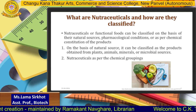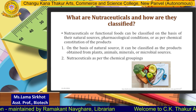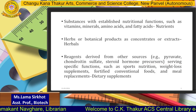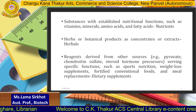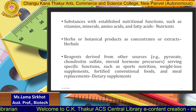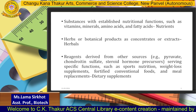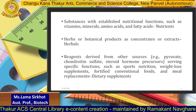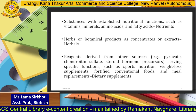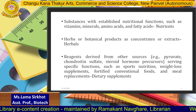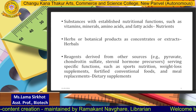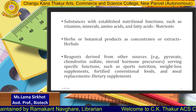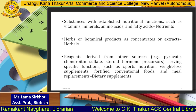Nutraceuticals classified as per their chemical groupings include: substances established for nutritional functions such as vitamins, minerals, amino acids, and fatty acids; herbs or botanical products as concentrates or extracts used for herbal therapies; and reagents derived from other sources such as pyruvate, chondroitin sulphate, and steroid hormone precursors.